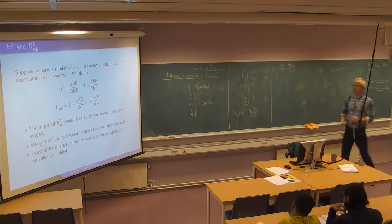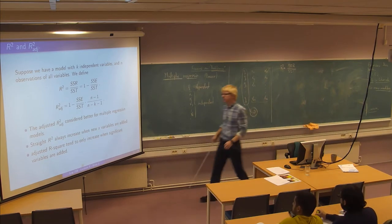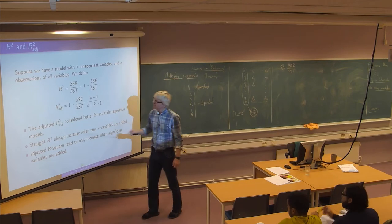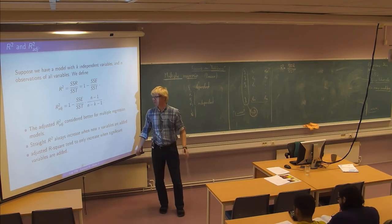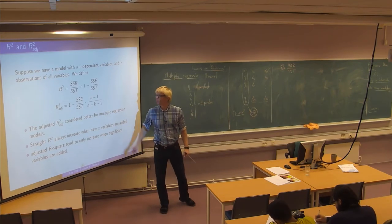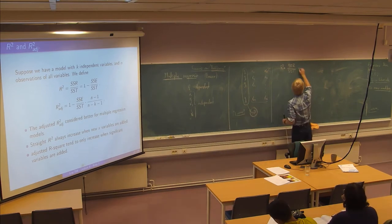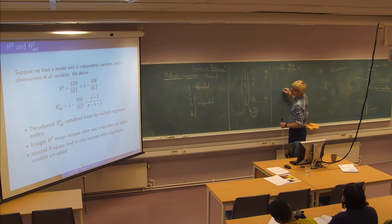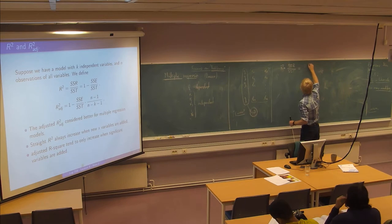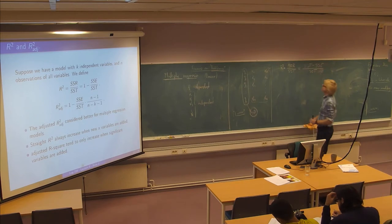So we just see how much can we explain as a fraction of how much there is in total. This is SSR over SST. And then you will note when we do multiple regression, there's an alternative R square which is very often used. It's called the R square adjusted.